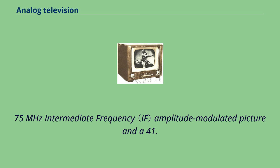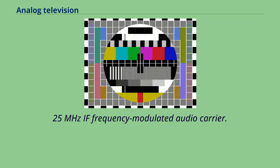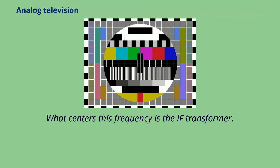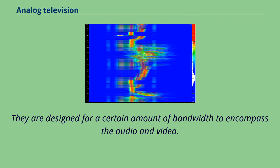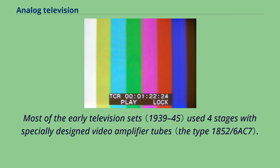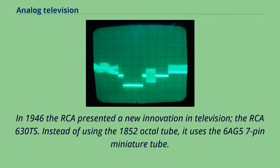Most of the early television sets used four stages with specially designed video amplifier tubes. In 1946 RCA presented a new innovation in television, the RCA 630TS. Instead of using the 1852 octal tube, it uses the 6AG5 7-pin miniature tube. It still had four stages, but it was half the size. Soon all of the manufacturers followed RCA and designed better IF stages. When the tube era came to an end in the mid-70s, they had shrunk the IF stages down to 1 to 2 with the same amplification.